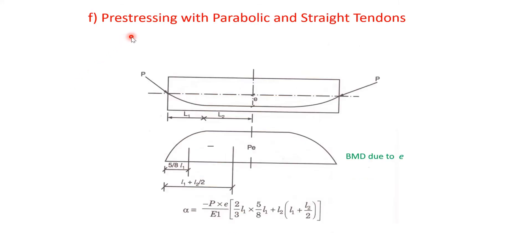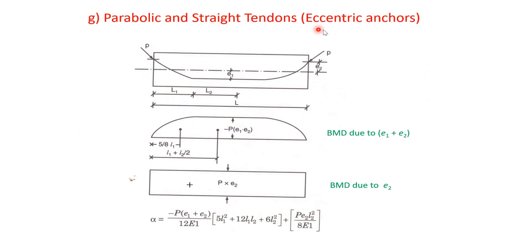Similarly, for pre-stressing with a parabolic and straight profile — part of the beam parabolic and part straight — the bending moment diagram follows the cable profile. By dividing into two portions and finding delta for each, you get the combined deflection formula. The same approach applies to parabolic-and-straight profiles with eccentric ends. Once you are clear with the moment area method, you can derive any of these values without memorizing each formula.